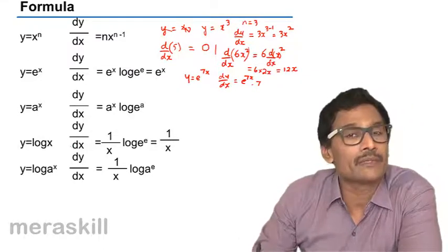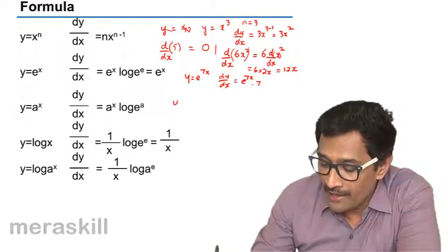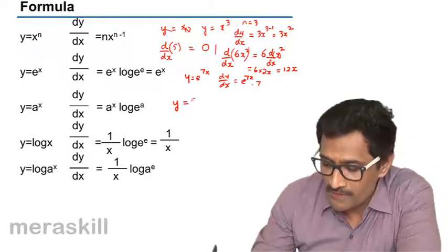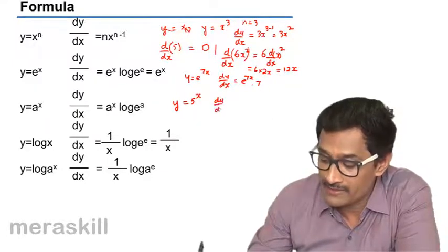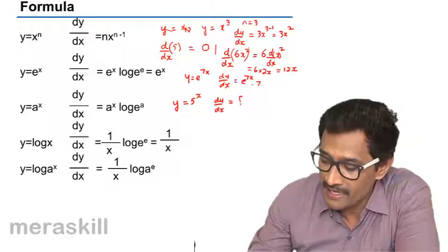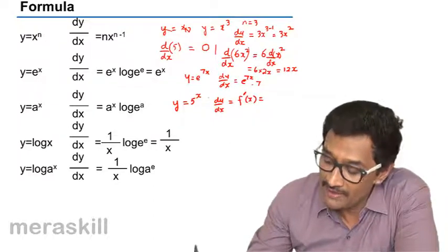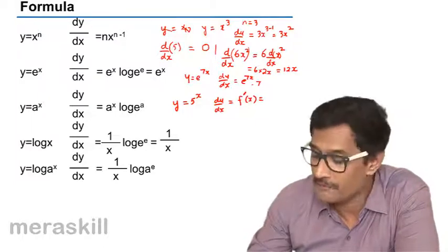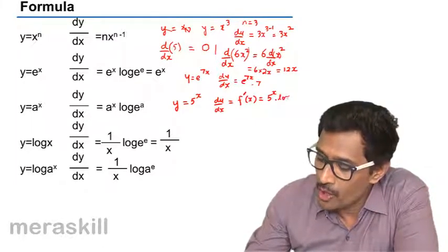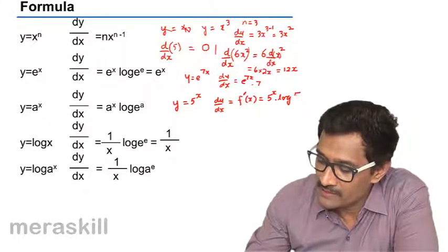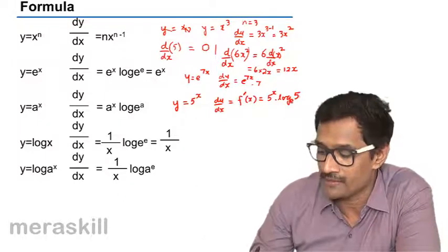Now suppose you have y equals a^x. Then how do you find the derivative? So y equals suppose 5^x. So in that case dy/dx, as I told you we can even write it as f'(x), will be a^x, that is a in this case is 5. So 5^x into log a to the base e, that is log 5 to the base e. We can leave it as log 5 itself, log 5 to the base e.